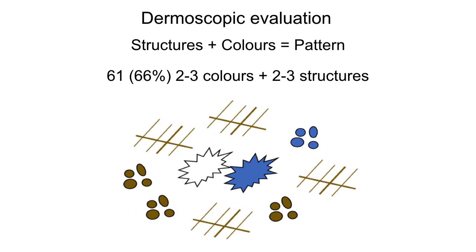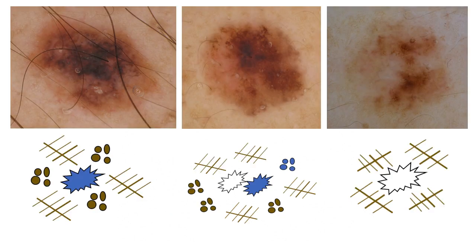All together, considering the structureless areas, the majority of these lesions were characterized by more than one color — usually two or three — and more than one structure — two or three — generating a complex pattern. Here, from left to right, we can see some examples of this entity.